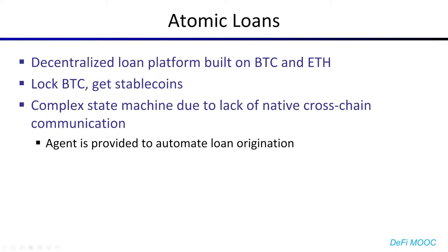With that introduction, let me show you Atomic Loans. Atomic Loans is a decentralized loan platform built on both Bitcoin and Ethereum. The high-level gist is that you lock Bitcoins and get stablecoins. Except, due to the lack of native cross-chain communication, there is a really complex state machine implemented. It's actually so complex that Atomic Loans provides an agent you can run, which helps you navigate the Bitcoin-Ethereum interactions.